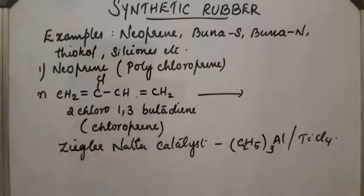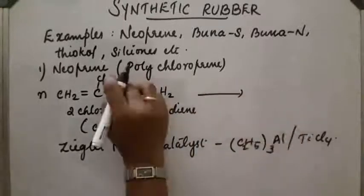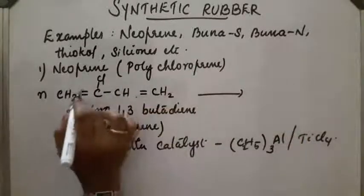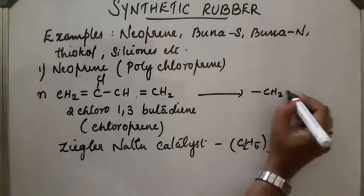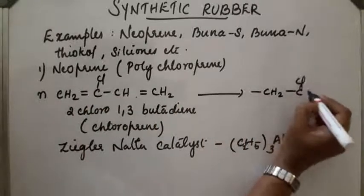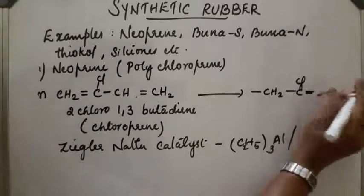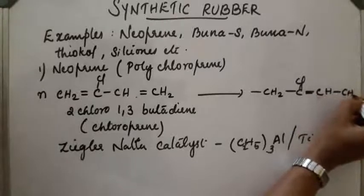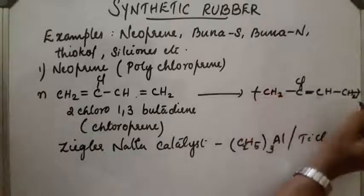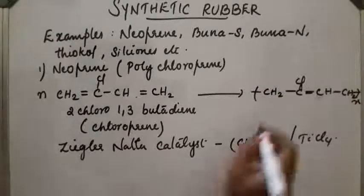So 2-chloro-1,3-butadiene polymerizes and forms polychloroprene. So this bond shifts, Cl-C=C-CH2, n times. This compound is called as neoprene.